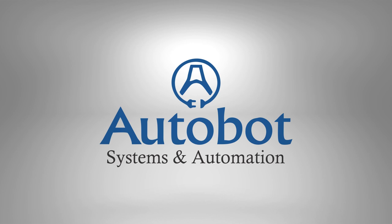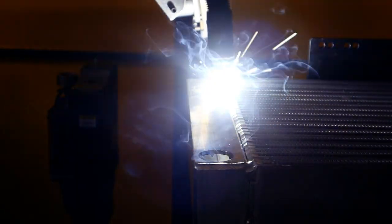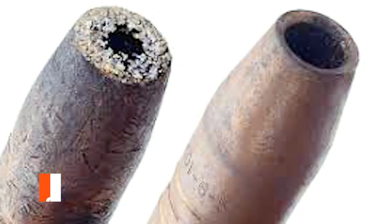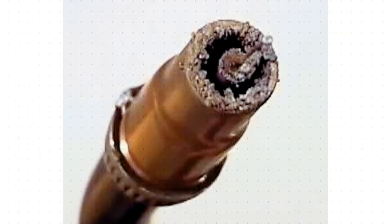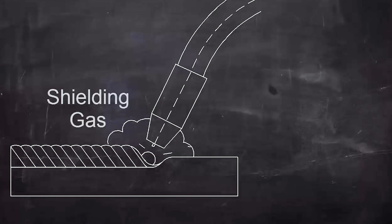Automatic torch cleaning system in gas metal arc welding GMAW. A common unwanted side effect is the creation of what welders call spatter. These spatters can accumulate in the welding torch over time and can restrict the shielding gas.